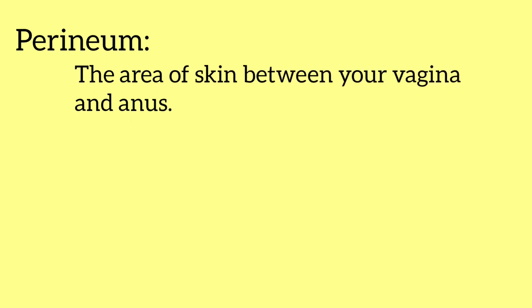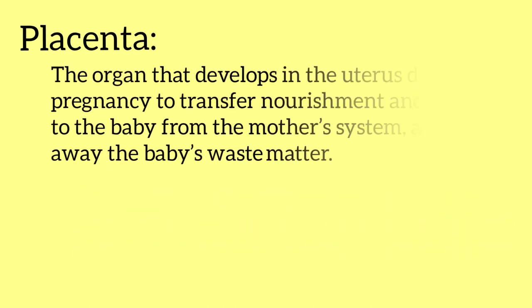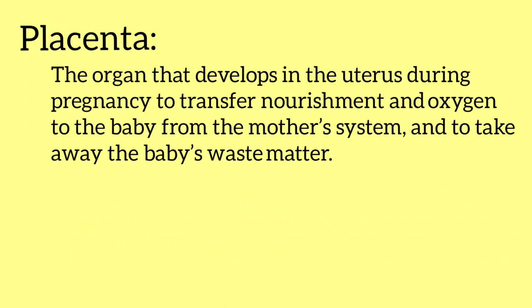Perineum is the area of skin between your vagina and anus. Pessary is a special type of medication designed to be inserted into the vagina; prostaglandin pessaries are sometimes used to induce labor. Placenta is the organ that develops in the uterus during pregnancy to transfer nourishment and oxygen to the baby from the mother's system and to carry away the baby's waste matter.